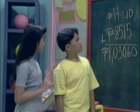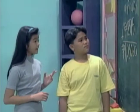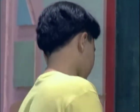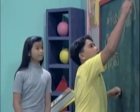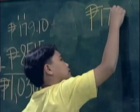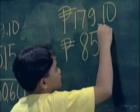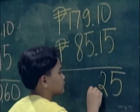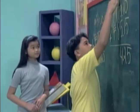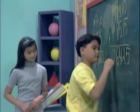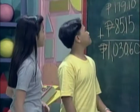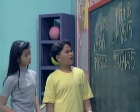Patricia explains the error: their amounts are 179 pesos and 10 centavos, and 85 pesos and 15 centavos — so the answer can't be that large. The other points out that she didn't align the decimal points correctly. The correct total is 264 pesos and 25 centavos.